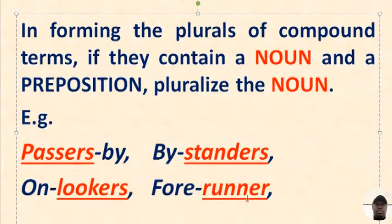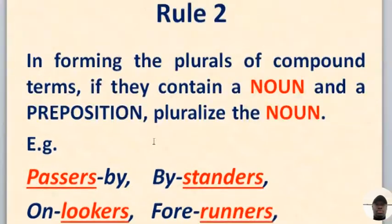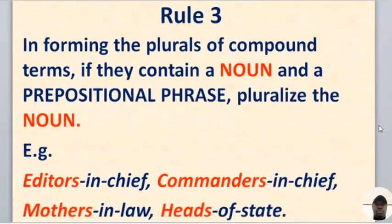Onlookers, and forerunners. For rule two, if the compound word contains a noun and a preposition, just pluralize the noun only.